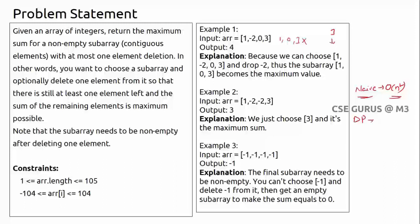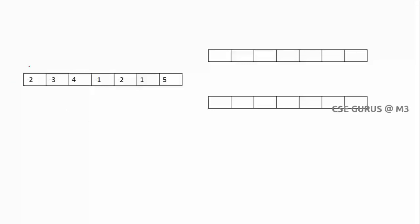Using dynamic programming, the answer can be computed in O(n). I've taken an example array to illustrate. To achieve O(n), I maintain two auxiliary arrays: a forward array `F` that stores maximum subarray sums going left to right, and a backward array `B` that stores maximum subarray sums going right to left.